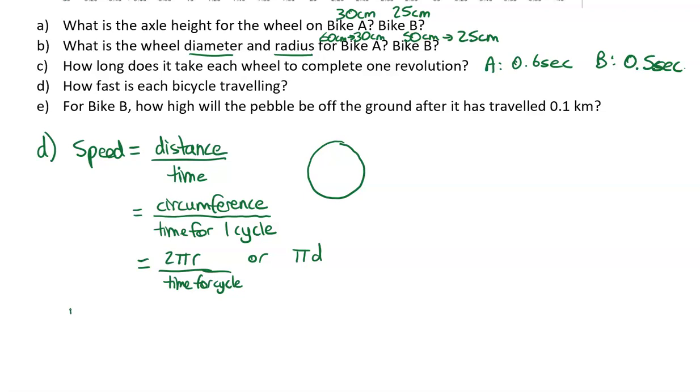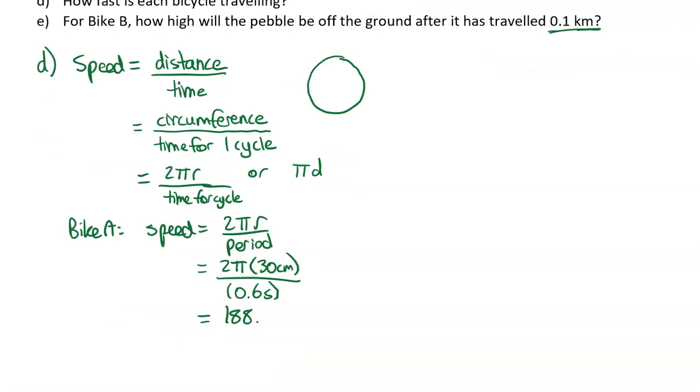So what we can do here is we can say for bike A, the speed is equal to 2 pi R divided by the period, as it is for bike B. We know the radius for bike A is 30 centimeters, and the period is 0.6 seconds. Then we go 2 times pi times 30 divided by 0.6. Now notice that this is going to give us units of centimeters per second, which we'll have to deal with in part E when it asks for kilometers. But for now, we can go with centimeters per second. What we get for bike A is a value of 188.50 centimeters divided by 0.6 seconds, or a value of 314.2 centimeters per second.